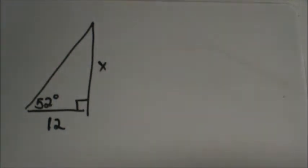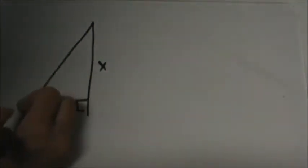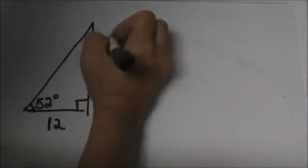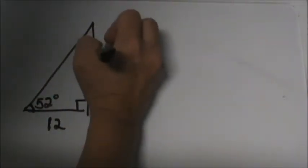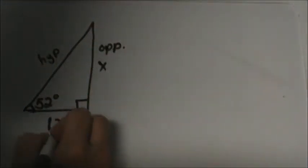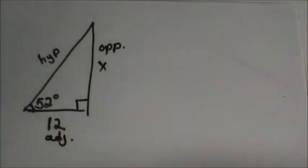We want to use this 52 degree angle as our reference angle. From this 52 degree angle, this side is the opposite, this side is the hypotenuse, so that means the side that's labeled 12 is my adjacent side.